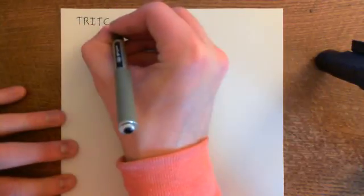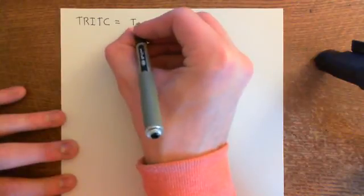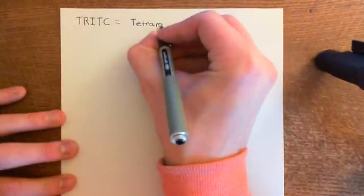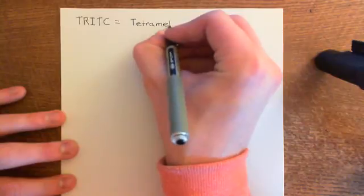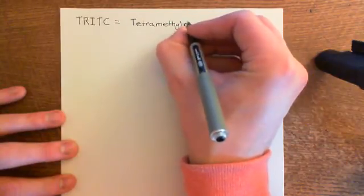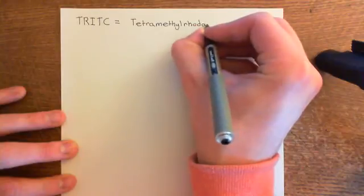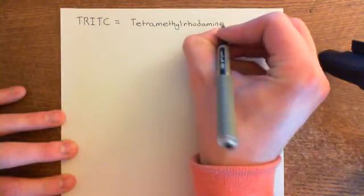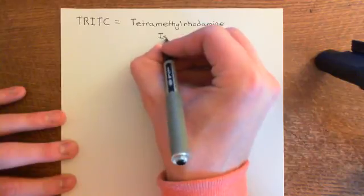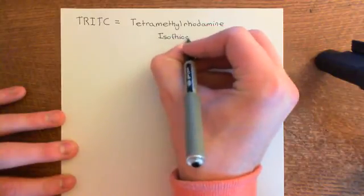TRITC - its name is even longer than FITC's. It stands for tetramethyl - that's the T - and then the R is for rhodamine, and then the ITC is exactly the same: isothiocyanate.